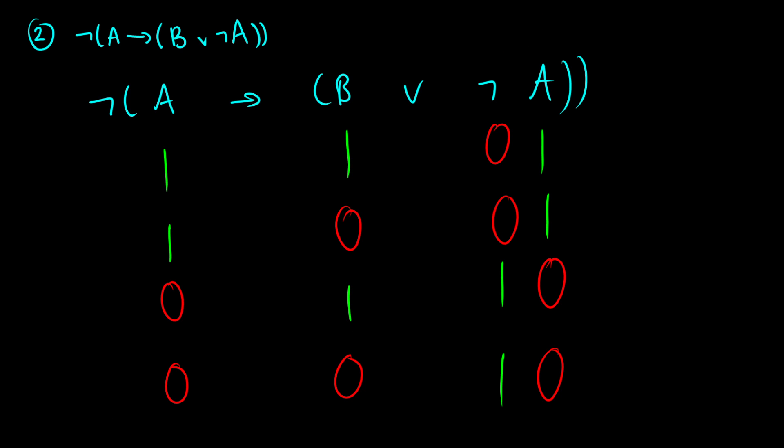Now let's do OR, which takes information from B and the NOT A column. This is true if at least one of them is true. So 1, 0 gives us 1; 0, 0 gives us 0; 1, 1 gives us 1; and 0, 1 gives us 1.